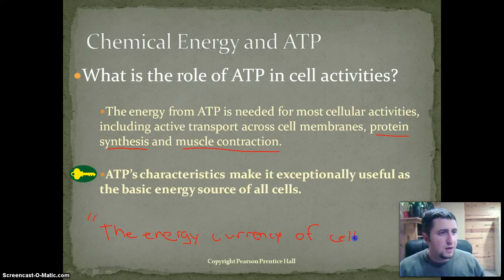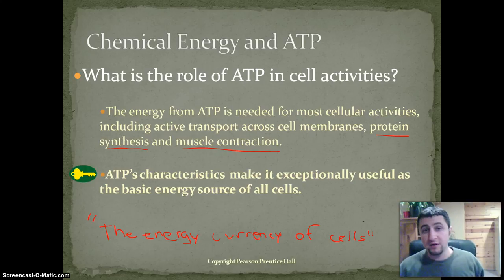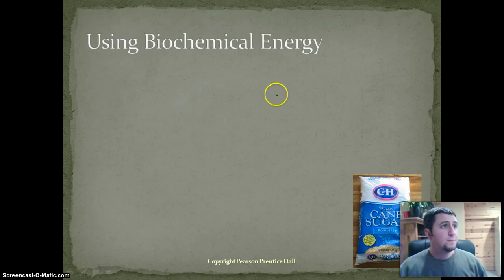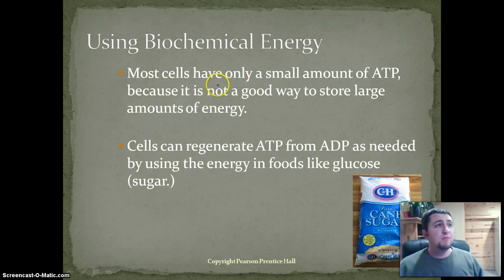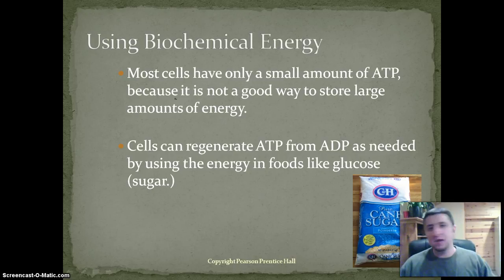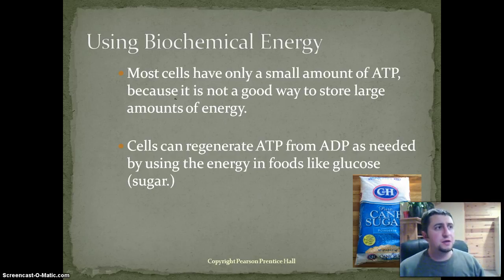ATP is a little bit like money in the fact that almost everything you do on a daily basis requires money, and basically everything that cells need to do requires energy. So it is the energy currency of cells. Most cells have only a small amount of ATP because it's not a good way to store a large amount of energy. We actually store large amounts of energy as fat, but when our cells actually need that energy, we break down that fat and make ATP molecules.